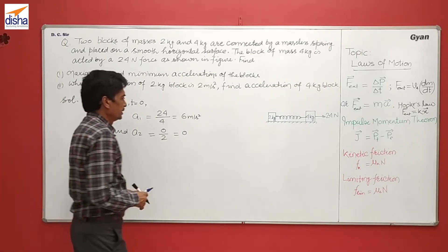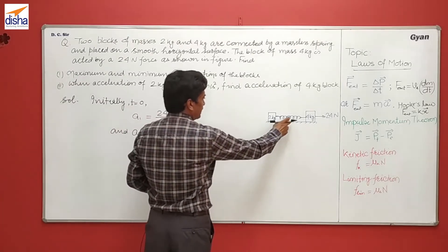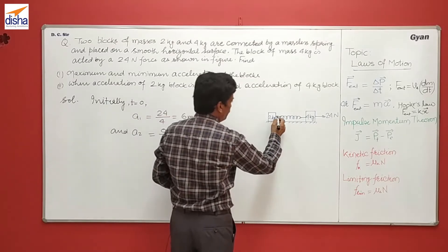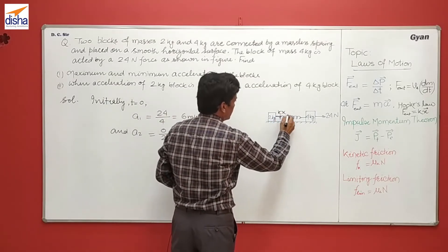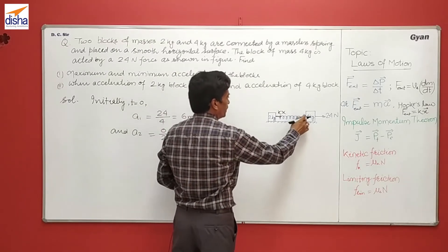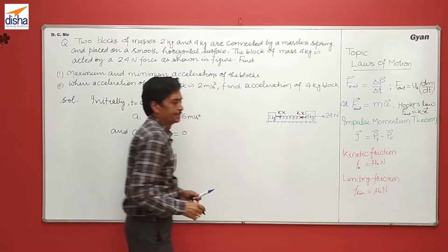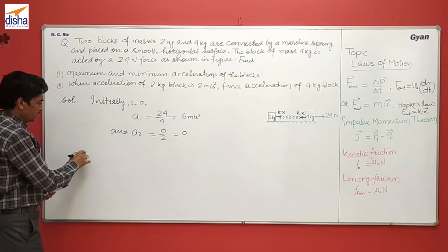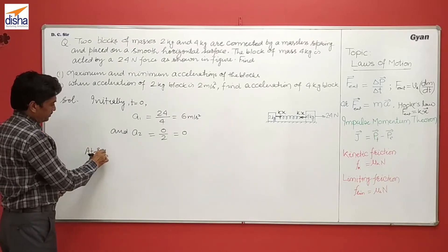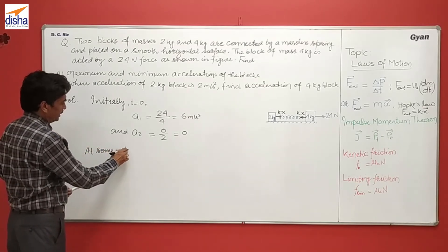Now at some extent, let the extension in the spring become x. So the force on 2 kg in this direction is kx, and according to Newton's third law, on the 4 kg in this direction.